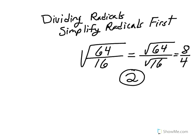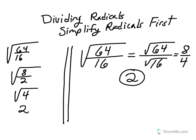Here's what the problem would look like if we reduced the fractions first. As you see, we can reduce the fractions from 64 over 16 to 8 over 2. 8 divided by 2 is 4. The square root of 4 is 2. There are more steps to do this than there are to reduce the radicals first.